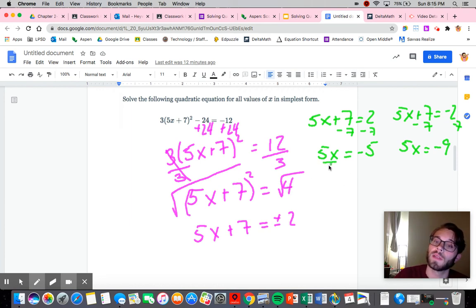So I'll divide by 5, I get x equals negative 1. Divide by 5, I'm going to get x equals negative 9 fifths.